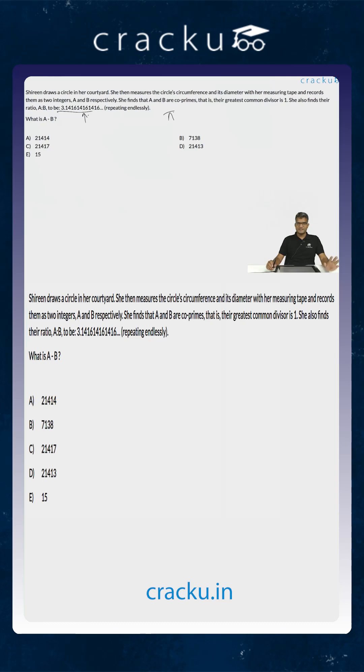Now we are required to calculate the value of a minus b. Nothing to be complicated - this is not something related to the circumference and diameter. We have to essentially make this recurring decimal into a fraction. How are we going to do it? If you call this decimal to be equal to x, x is equal to 3.141614161416...